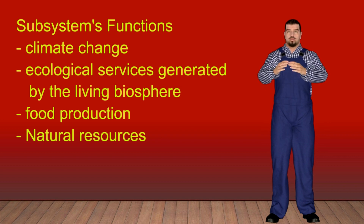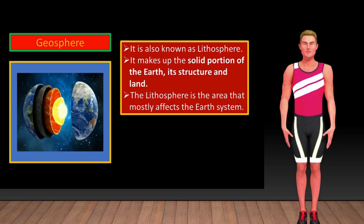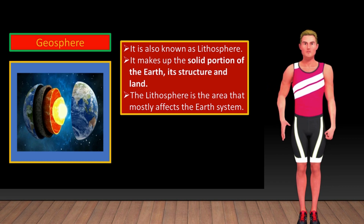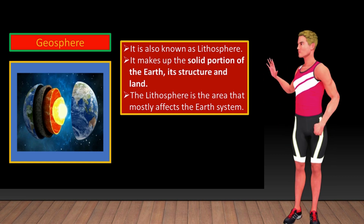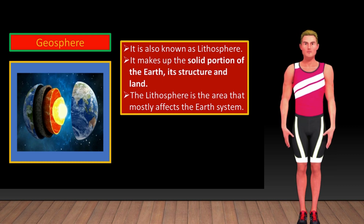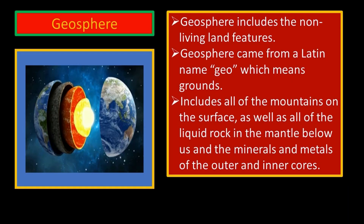Let us now elaborate the four subsystems of the Earth. Number one, the geosphere. The geosphere, sometimes called the lithosphere, refers to all of the rocks of the Earth — making up the solid portion of the Earth. It includes the planet's mantle and crust, the two outermost layers. Geosphere came from the Latin word geo, which means ground, describing all of the rocks, minerals and ground found on and in Earth.